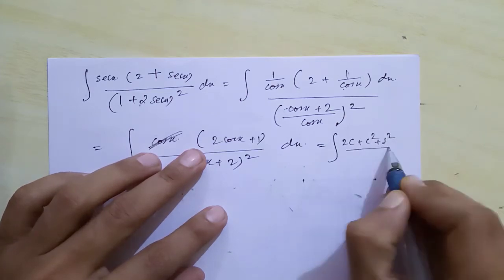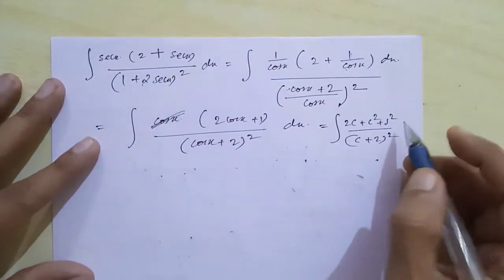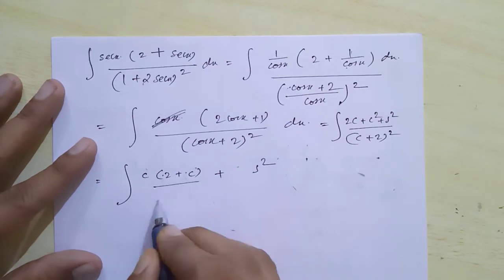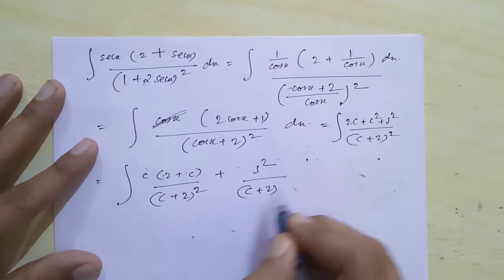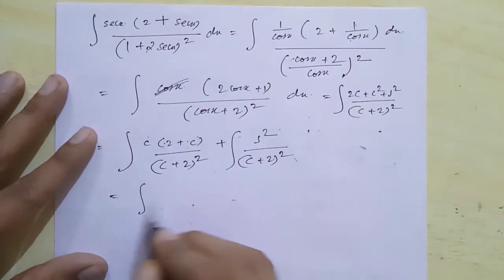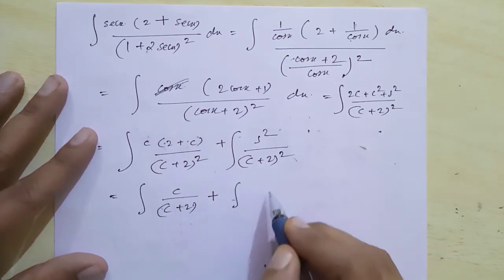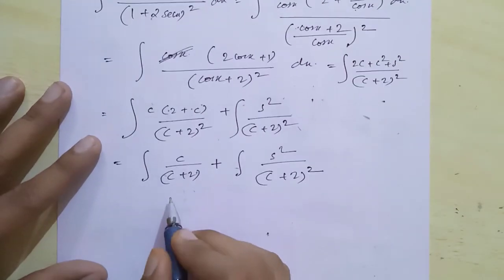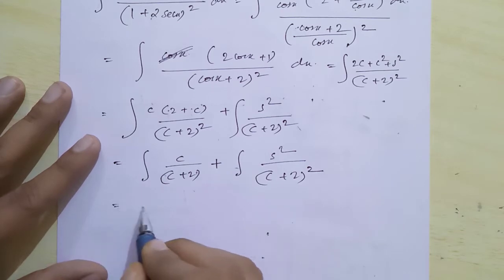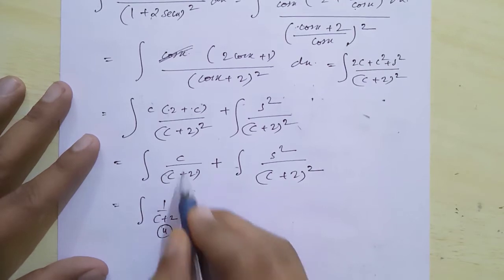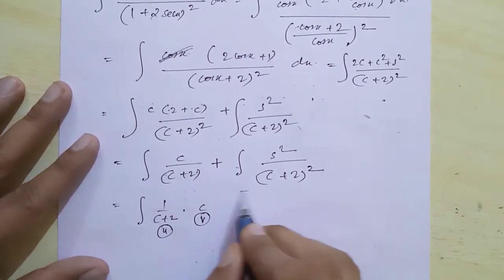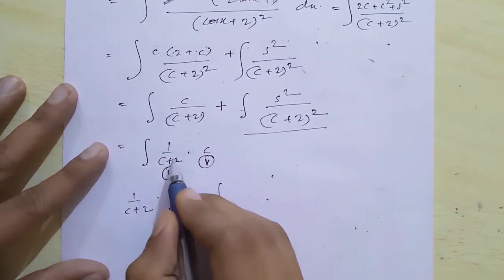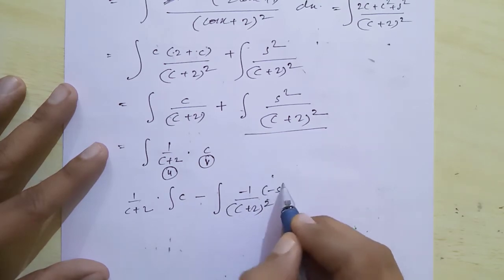So we get (2 + cos² x + sin² x) divided by (cos x + 2)². This gives integral of cos x/(cos x + 2)² plus the remaining term. We need to integrate both these terms. We take 1/(cos x + 2) as the u function and cos x as the v function.